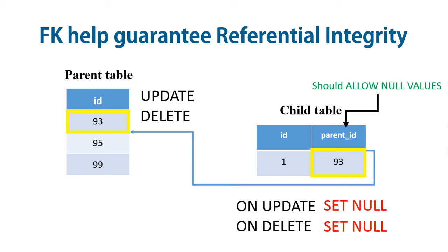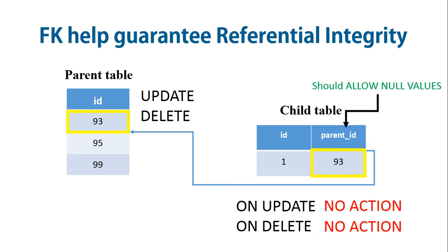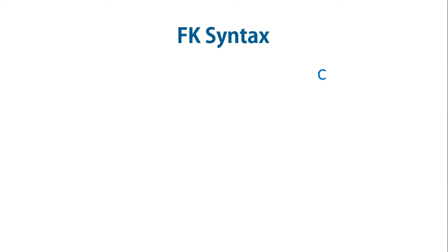If you specify a SET NULL action, make sure you have not declared the columns in the child table as NOT NULL. RESTRICT rejects the delete or update operation for the parent table. NO ACTION is a keyword from standard SQL; in MySQL it is equivalent to RESTRICT — the server rejects the delete or update operation if there is a related foreign key value in the reference table. If ON DELETE or ON UPDATE is not specified, the default action is always RESTRICT. Foreign key constraints can be added using a CREATE TABLE or ALTER TABLE statement.